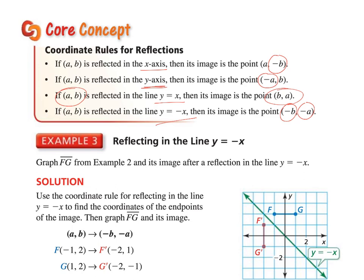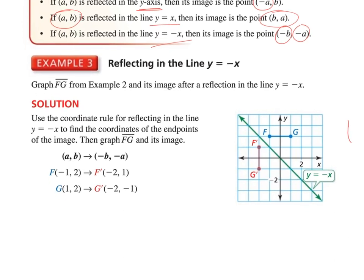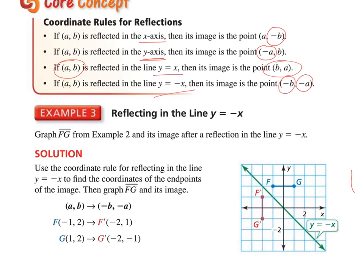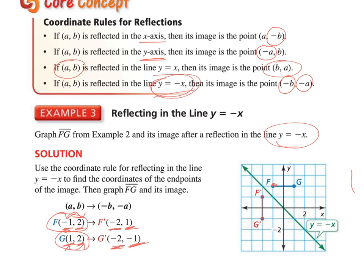For example three, graph segment FG from example two and its image after reflection in the line y equals negative x. Applying our properties: for point F, I flip the two coordinates and apply a negative to each — so the 2 becomes negative 2 and the negative 1 becomes positive 1. For G, I flip the two values, then the 2 becomes negative 2 and the 1 becomes negative 1. And that's all there is to it.